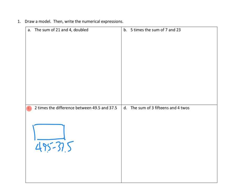49.5 minus 37.5. And then we have two exact copies of that, right? Because we've got two times the difference. So there's the difference, 49.5 minus 37.5, and there's the difference.